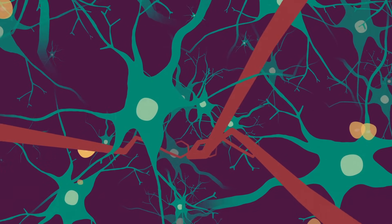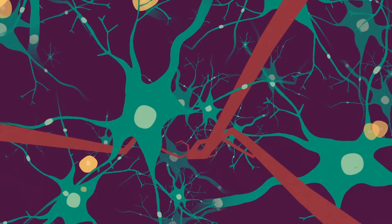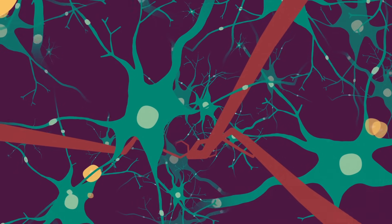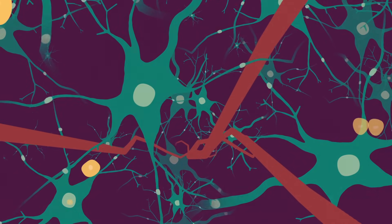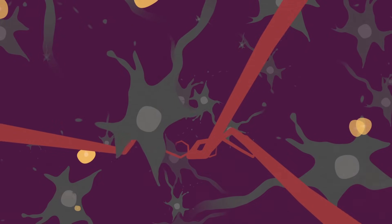Every second of our lives nerve cells in the brain are firing, but when these cells become damaged and their connections start to break down, a person can develop dementia.